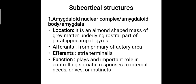Moving to the subcortical structures — the first is the amygdaloid nuclear complex, also called the amygdaloid body or amygdala. It is an almond-shaped mass of gray matter underlying the rostral part of the parahippocampal gyrus. It receives afferents from the primary olfactory area, since smells have emotions attached to them. It gives off efferents into the stria terminalis. Its function is controlling somatic responses to internal needs, drives, and instincts.